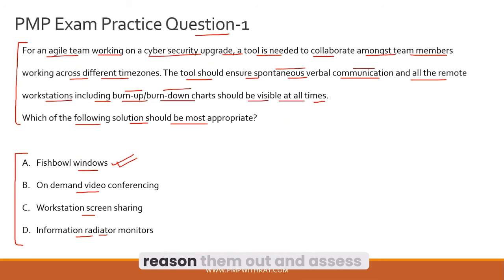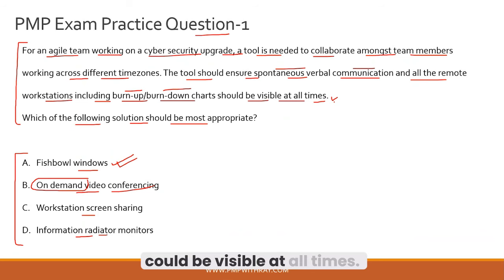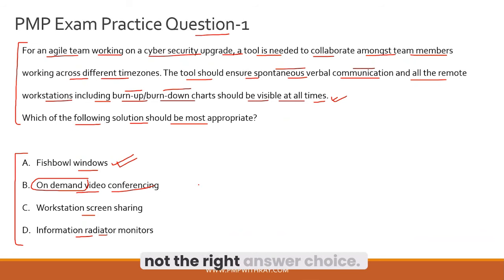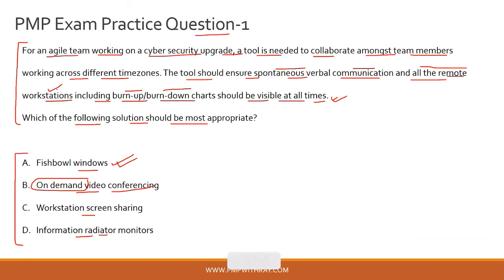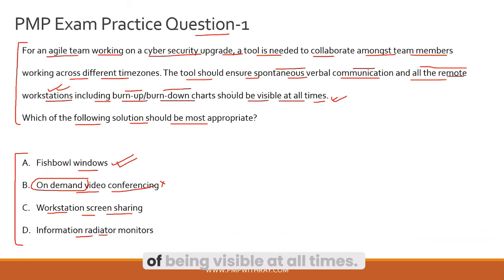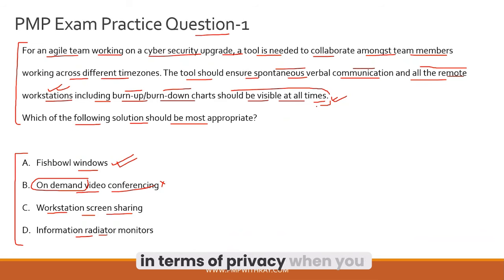Let's evaluate the other options. On-demand video conferencing is not something visible at all times — it may be on demand sometimes and not others. Additionally, video conferencing does not ensure visibility to all remote workstations. That is why option B is incorrect. Workstation screen sharing meets the requirement of being visible at all times, however sharing a workstation may cause privacy issues, especially in a cyber security project.